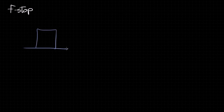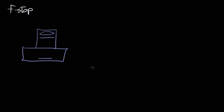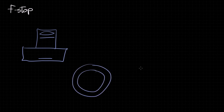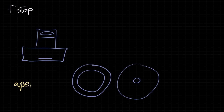If we look at a top-down view of our camera here, we have a lens up at the front, we have our film sensor at the back, and in between these two is a mechanism called the iris. The iris is basically a circular shield with a hole in the center that can open or close depending on how much light you want to let in. The hole itself is called the aperture.